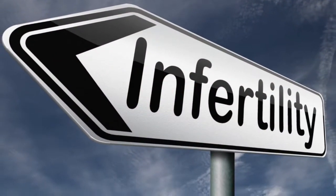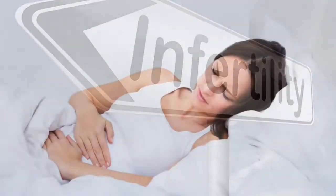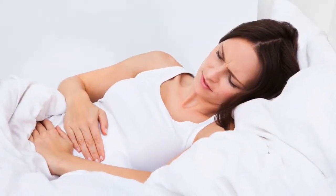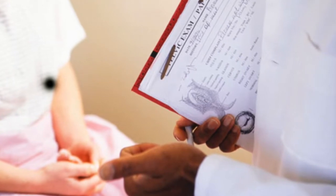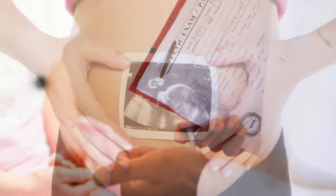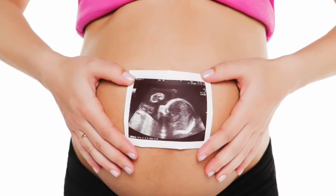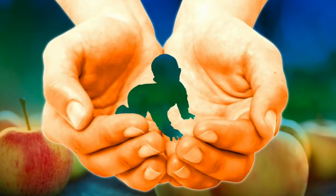No sperm: when the man ejaculates, there is no sperm in the semen. Low sperm mobility, or motility: the sperm cannot swim as well as it should. Abnormal sperm: perhaps the sperm has an unusual shape, making it more difficult to move and fertilize an egg.